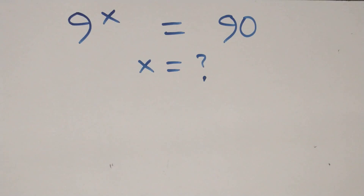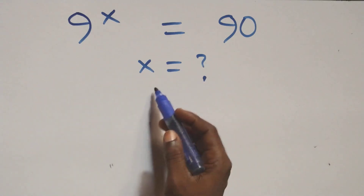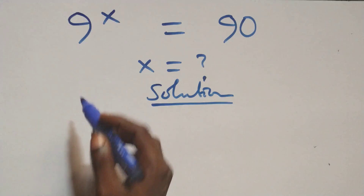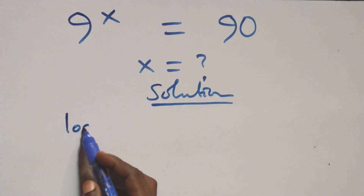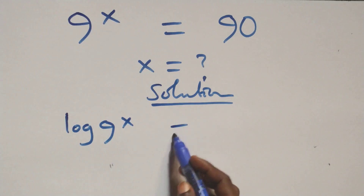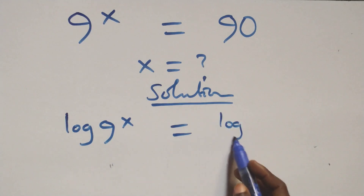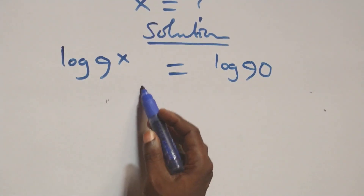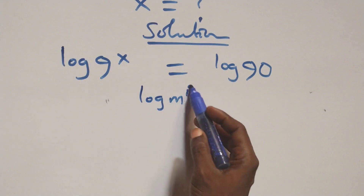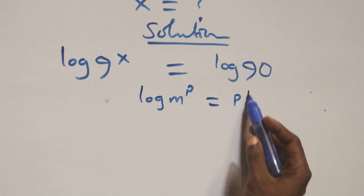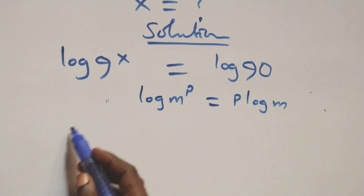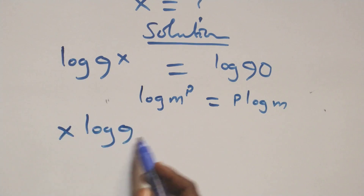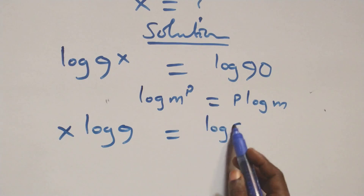Hello, you are welcome. We solve this exponential equation: 9 raised to power x equals 90. We take the log on both sides, giving us log(9^x) equals log(90). We then apply the power rule of logarithms — log(m^p) equals p·log(m) — so this becomes x·log(9) equals log(90).